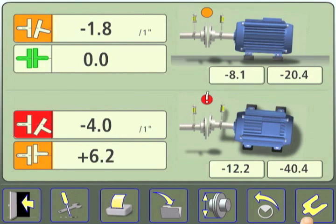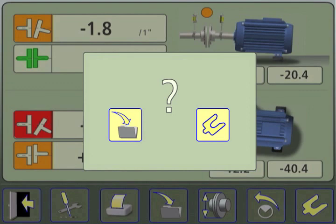To begin the correction process, touch the shim icon in the lower right corner of the screen. You will be reminded to save the as-found data. If you choose to save the data, touch the folder icon. If saving the initial data is not necessary, touch the shim icon.